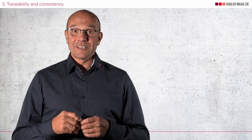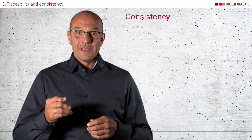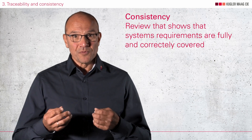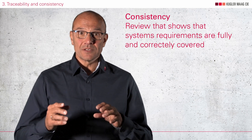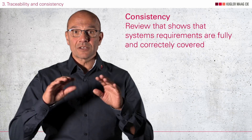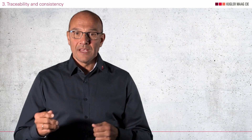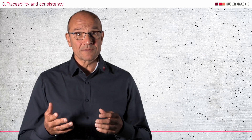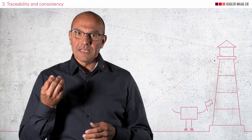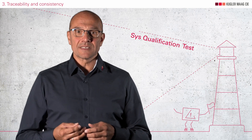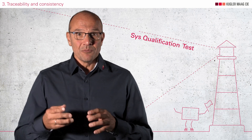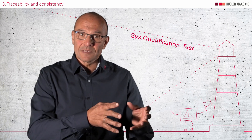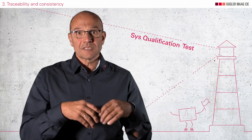The second part of this aspect is about consistency. Consistency can only be proven in a review where you show that you covered the system requirements completely and correctly. If you skip this review, you may have incomplete or faulty system test cases. The worst part is that you may not even notice the defects in the system qualification test, because this test is performed against the system requirements — if these are faulty, your tests may not show false behavior. So this review is really important.